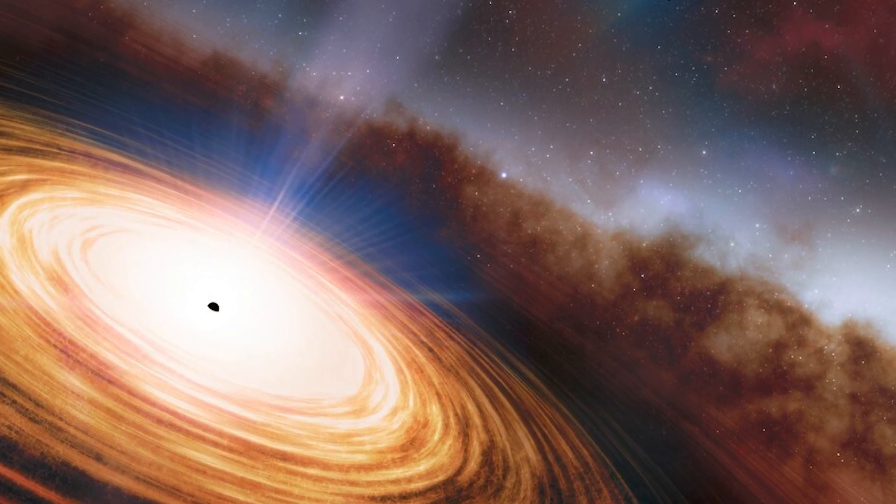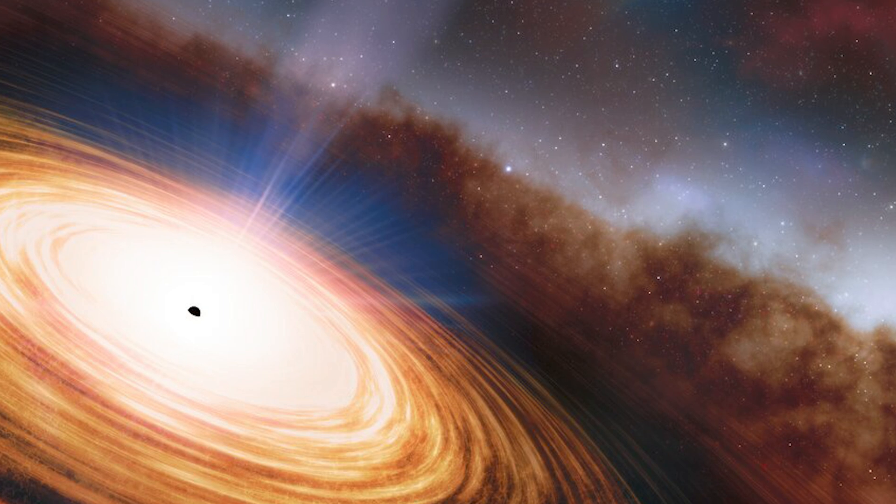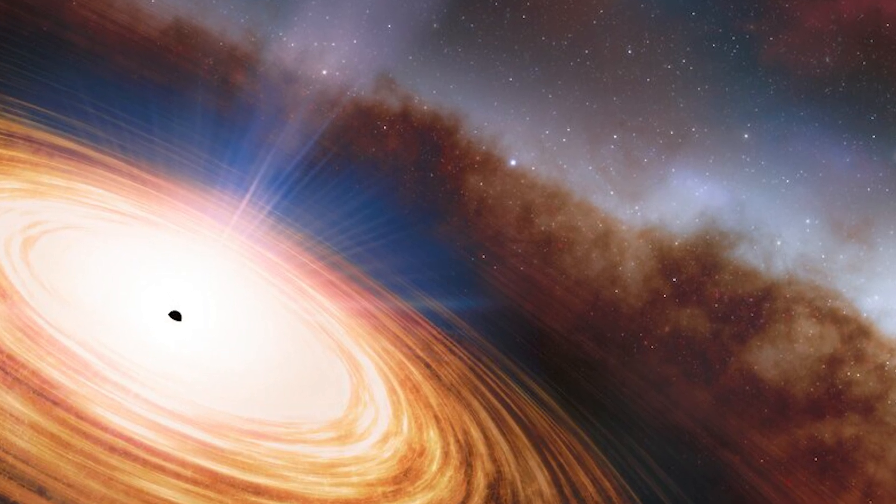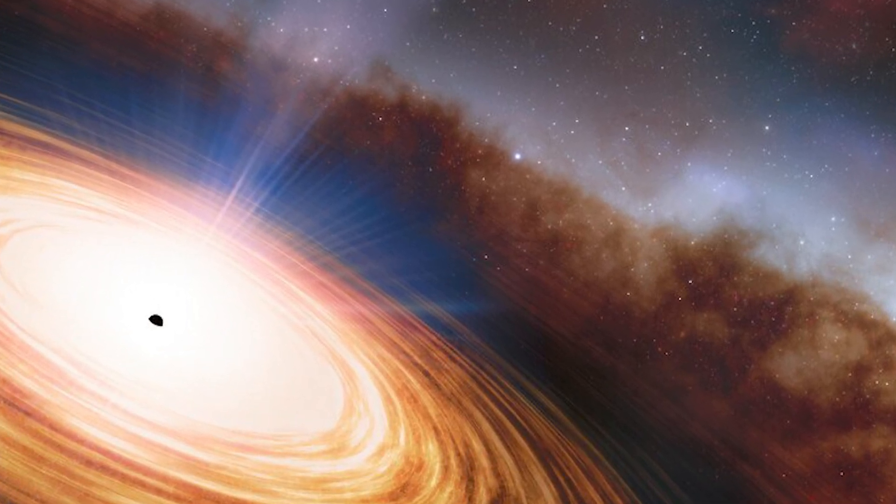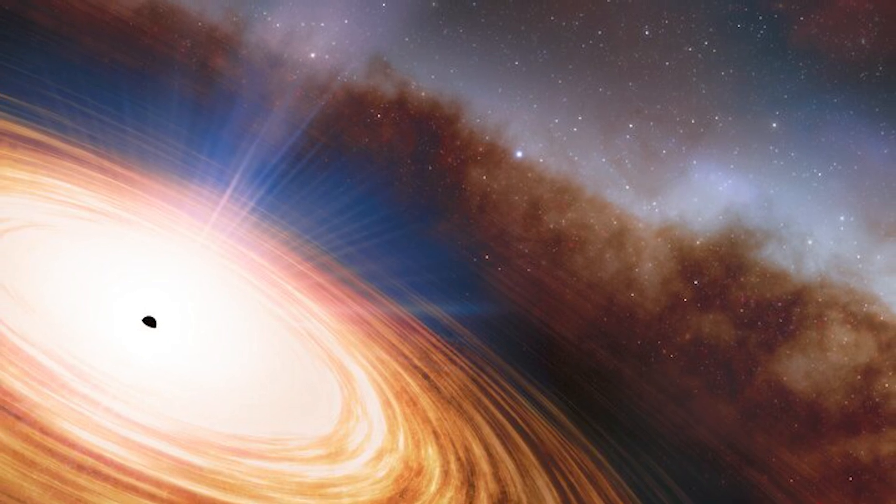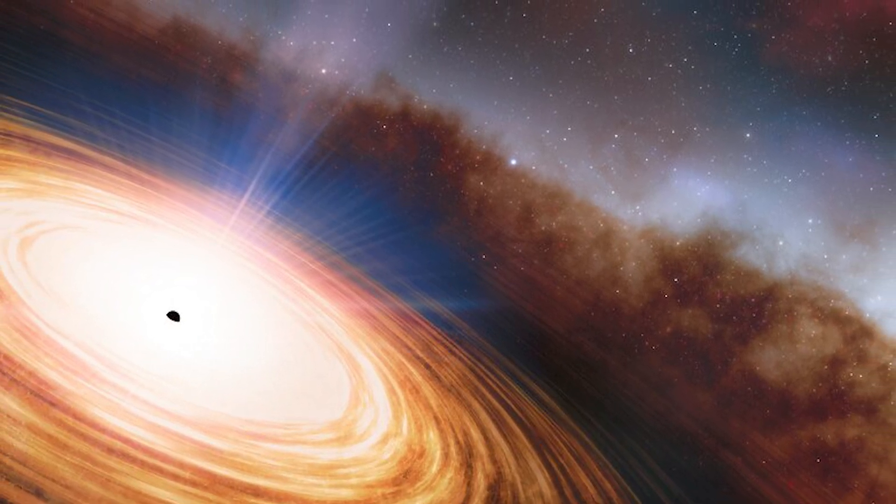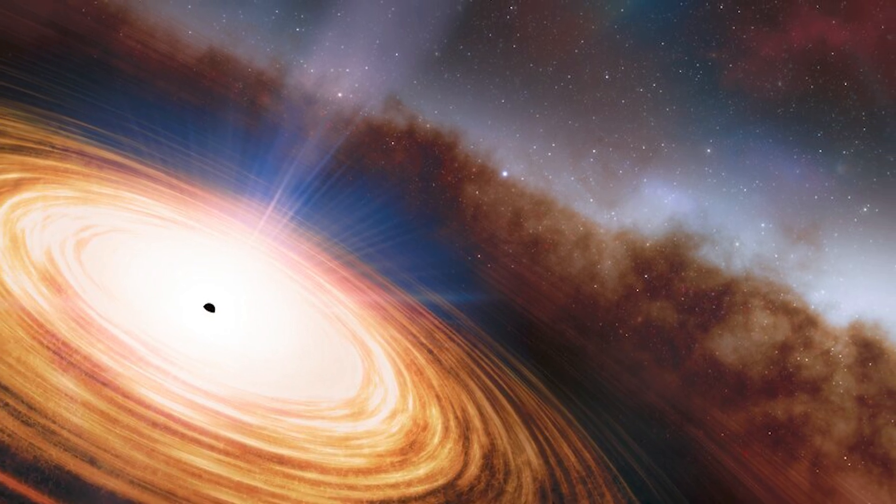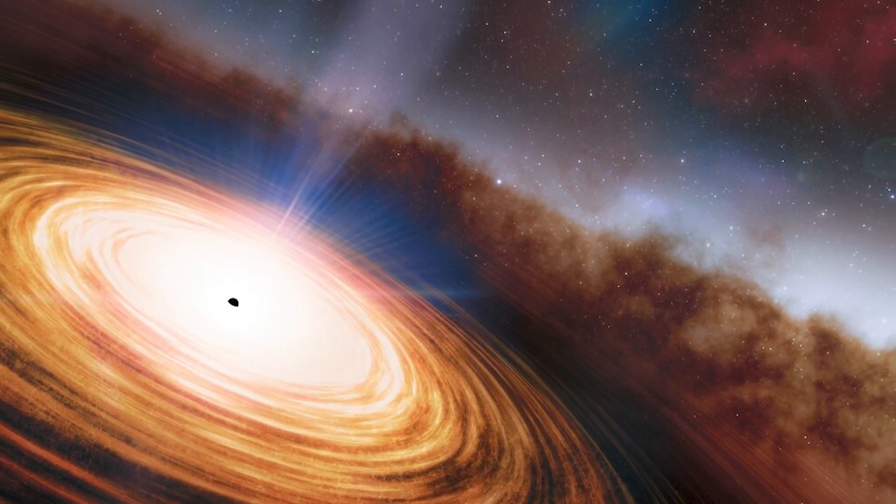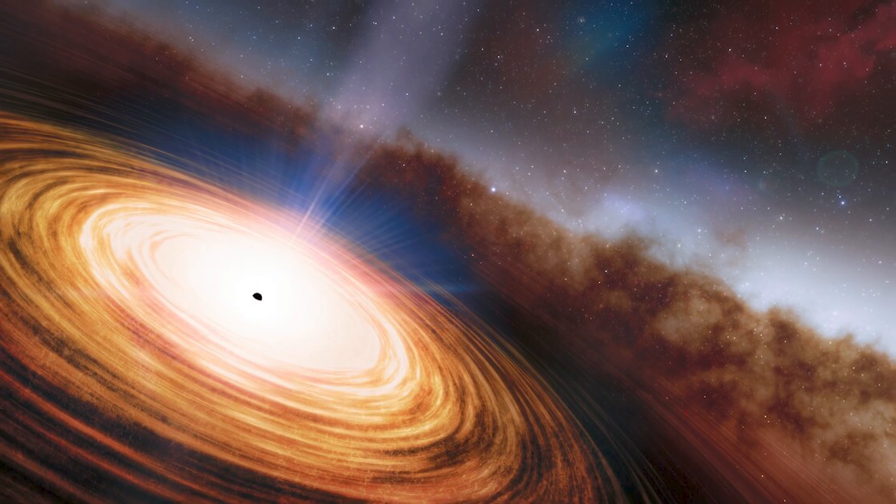Blazars are a type of quasar. When matter from an accretion disk falls into a black hole, some of it is ejected into space in the form of a huge jet. This happens in all quasars. But in blazars, one of these jets is directed directly toward the Earth.